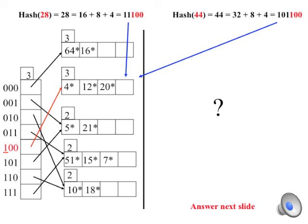Both 28 and 44 hash to the same location, exceeding the corresponding bin's capacity, so the bin must be split and the hash table doubled in size.